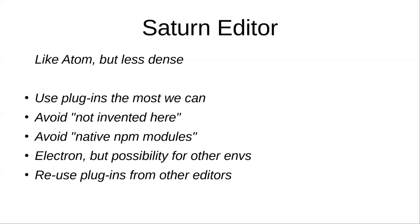There are some ideas that Atom did that are really good that I want to implement. Atom decided to use plugins as much as possible. I want to go even further, but avoid the 'not invented here' problem. We use community packages most of the time and avoid native NPM modules, especially with Electron and multiple architectures now that macOS is moving to ARM.